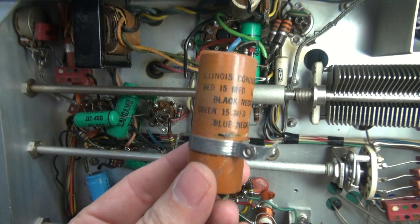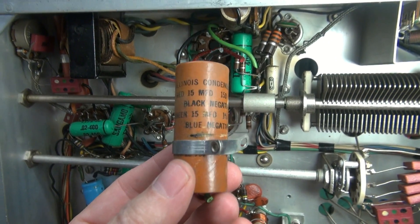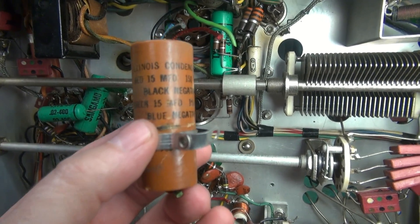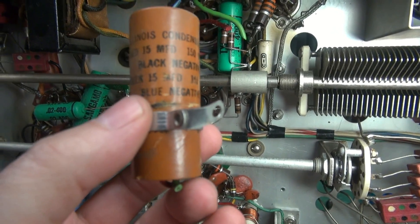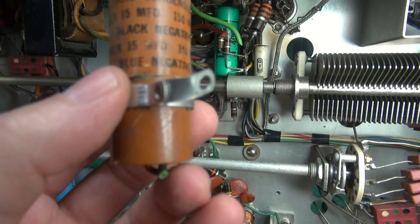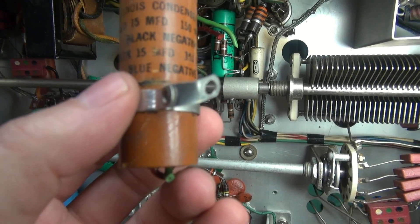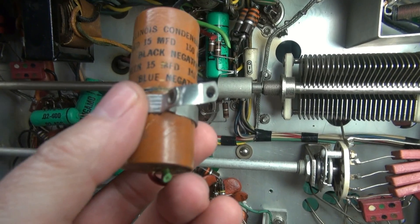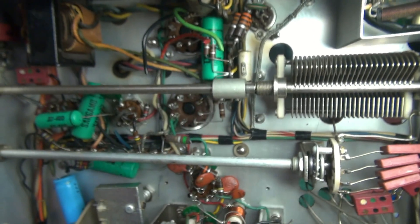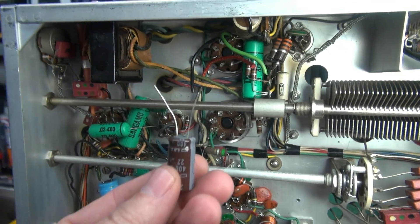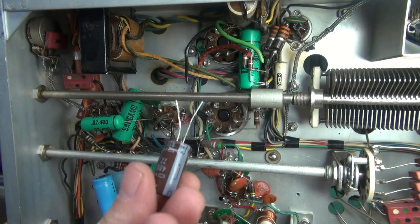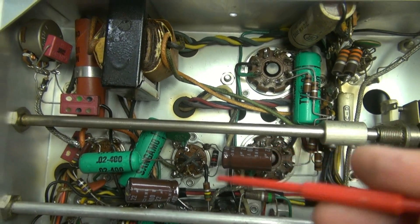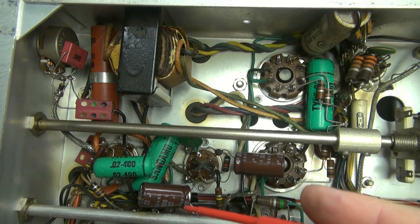So here's that cap that we're getting ready to replace. Now one word of caution. You would assume that both the negatives go to ground. Well, they don't. On the schematic, this is C59A and B. 59A, the negative does go to ground. The 59B, the positive goes to ground. So don't mess that up, all right? What I'm going to do is change them out with these individual radial mount caps that are 22 microfarad 400 volt. So there's the two radials that replace C59A and B.